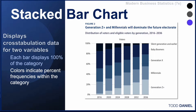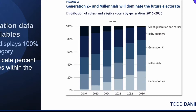Let's look at these 100% stacked bar charts. Notice that the bars are all exactly the same height, representing 100%. If I asked you how many people voted in 2016 compared to 2020, you would not be able to tell from the height of these bars. However, you can clearly see the subdivisions within those categories. The subdivisions represent generations.